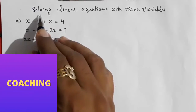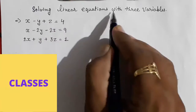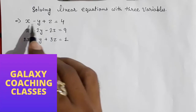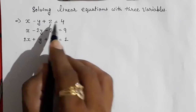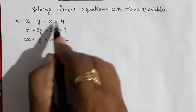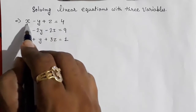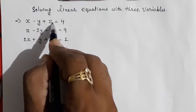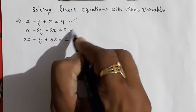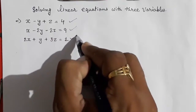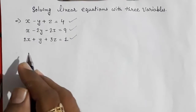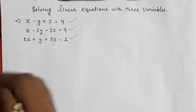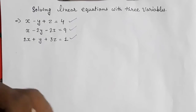Hello friends, today we are going to solve a linear equation with three variables. This is a linear equation having three variables x, y, and z, and we are having three such equations. With the help of these we are going to find out x, y, and z.